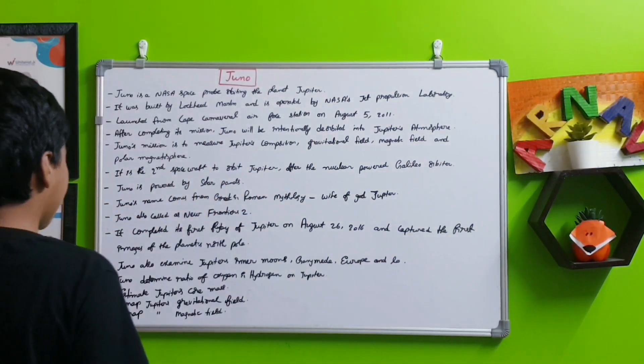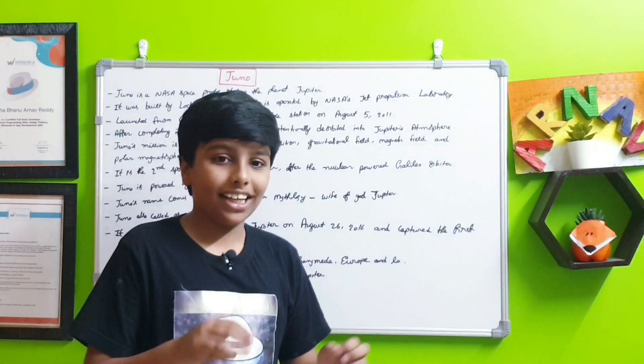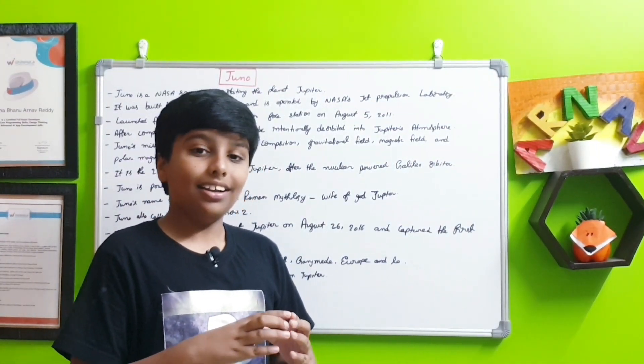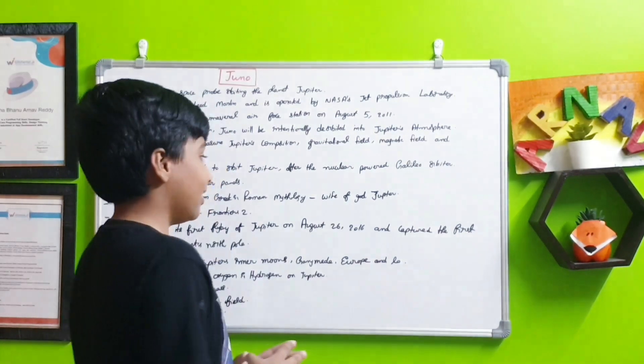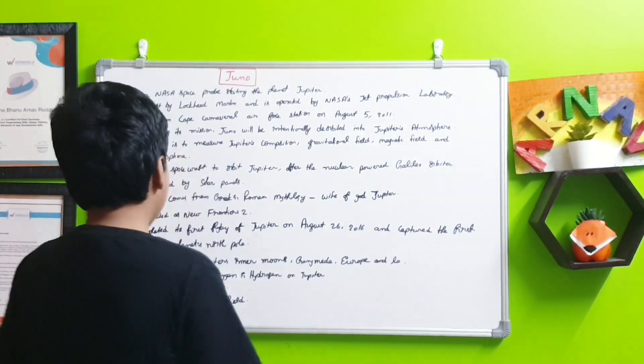Next it will estimate Jupiter's core mass. If there is a core of Jupiter, then it will try to calculate the mass of that core inside Jupiter, if there is even a core first.